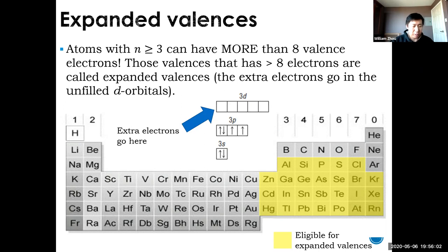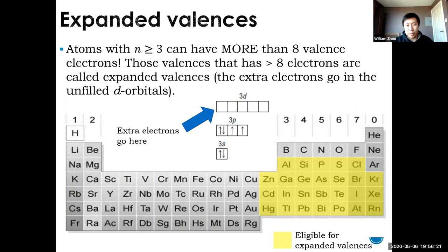Only elements from the third row and lower are able to have expanded valences. Your favorite elements — carbon, nitrogen, oxygen — they can't do it. Don't try to give them more than eight valence electrons or you'll get the question wrong. But phosphorus, sulfur, and chlorine — yes, they can. Highlighted on the periodic table are some key elements able to have expanded valences.